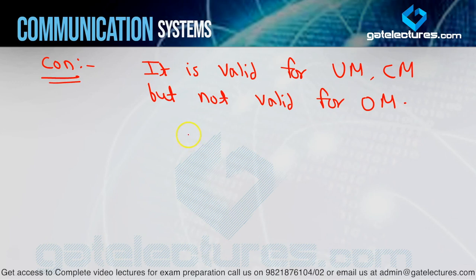We have now studied two types of demodulation techniques. First is square law demodulation — we saw its disadvantage. Then we studied envelope detection — its disadvantage is that it cannot be used for over-modulated waveforms. Therefore, we need to study a third demodulation technique: synchronous and coherent detection, which we will study in the next video.